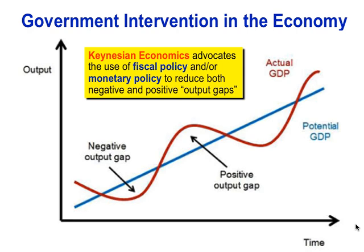Keynesian economics basically advocates the use of fiscal policy and/or monetary policy to reduce both negative and positive output gaps — obviously to recover from recession and maybe cool down the economy when it might be overheated and producing above actual long run productivity.